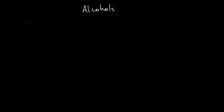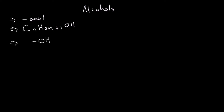Now I'm going to talk about alcohols. Alcohols always end in '-anol', so you have methanol, ethanol, propanol, and so on. Their general formula is CnH2n+1OH. Their functional group is that they always contain an OH group within the molecule. OH is also referred to as the hydroxyl group.